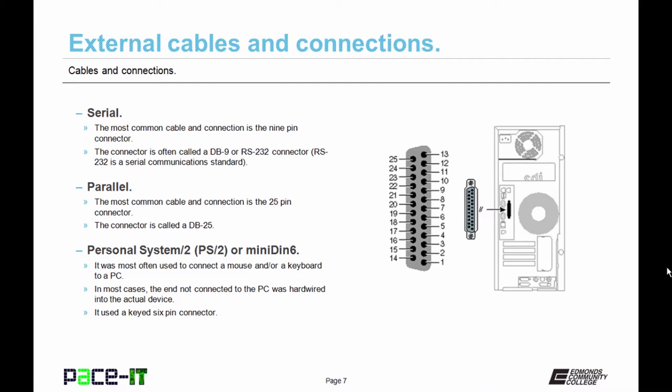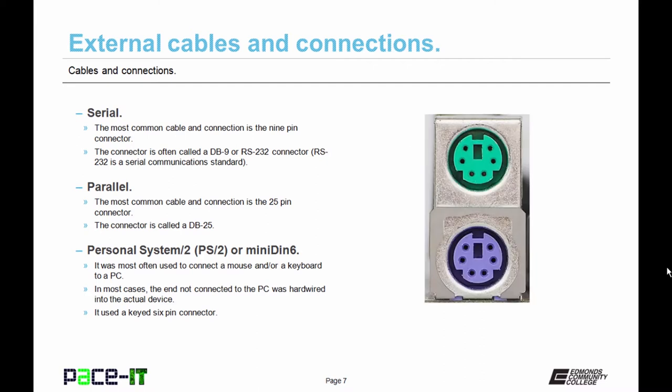Then there's the parallel cable and connection. The most common cable and connection is the 25 pin connector. And guess what it's commonly called? It's commonly called a DB25. Then we have the PS2, the personal system 2 connection, which can also be called a mini DIN 6 connection. It was most often used to connect a mouse and or a keyboard to the PC. In most cases, the end not connected to the PC was hardwired into the actual device. It uses a keyed six pin connector. Now you'll be hard pressed to buy a modern PC that has a PS2 connection.